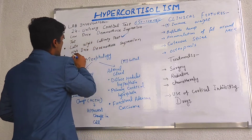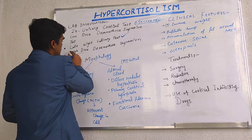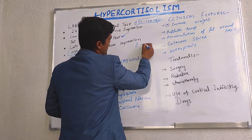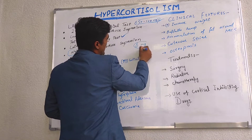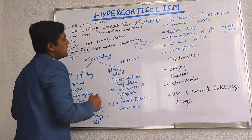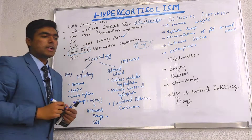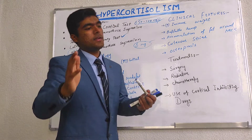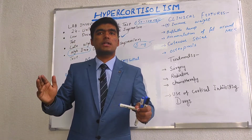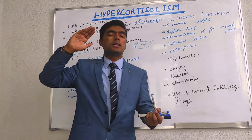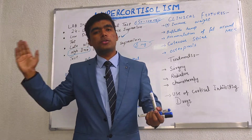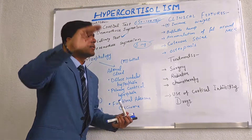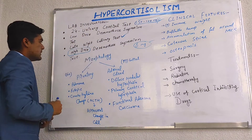For the high-dose dexamethasone suppression test, we give 8 mg of dexamethasone at 11 PM and check the reaction of the adrenal gland. In the same way, in a normal patient the response is low, while in a hypercortisolism patient it is elevated.